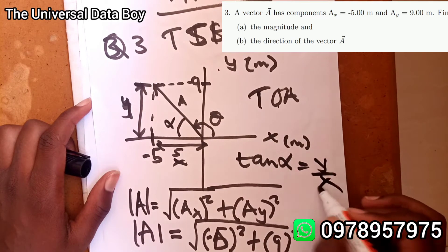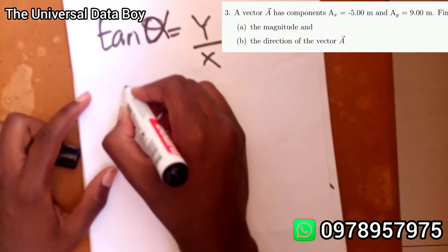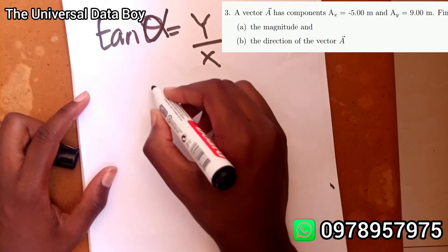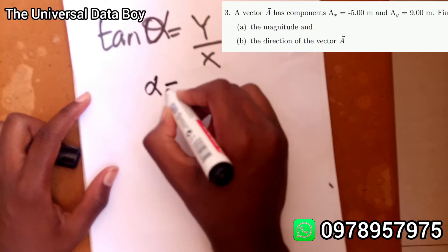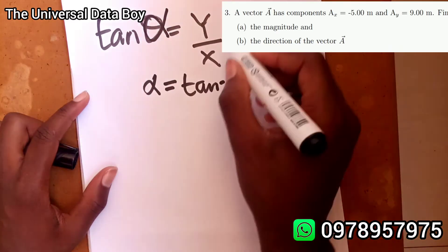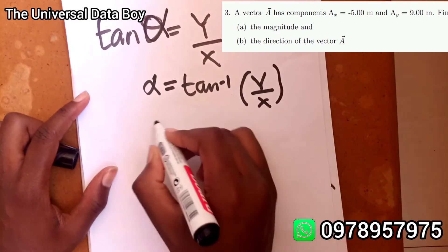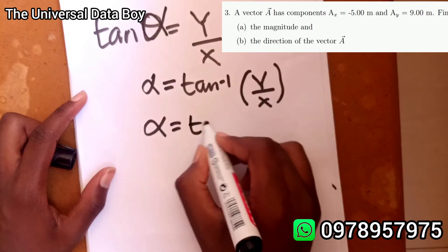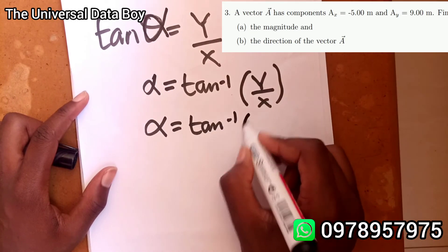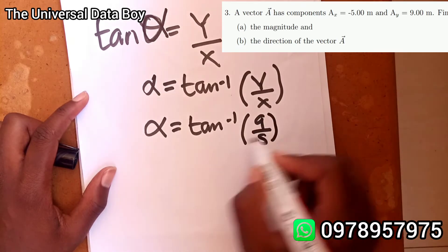So tan of alpha will be equal to what's in the y over what's in the x. Our alpha will be tan inverse of y over x. So our alpha is going to be tan inverse of, in the y we had 9, in the x we had 5.